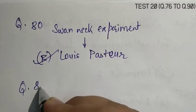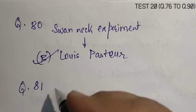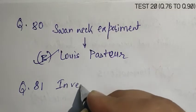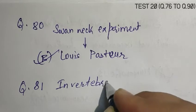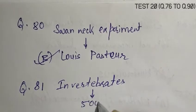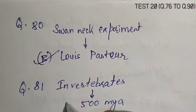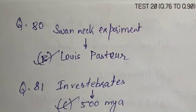Question number 81, Invertebrates were formed and active by the time of. Invertebrates were active 500 million years ago. So, the correct answer is C.